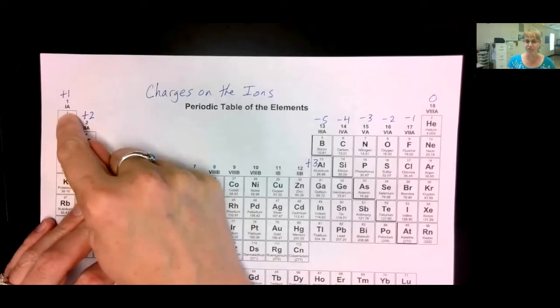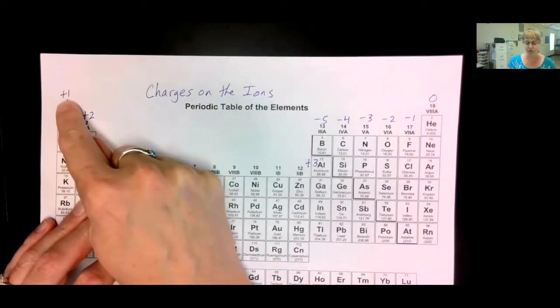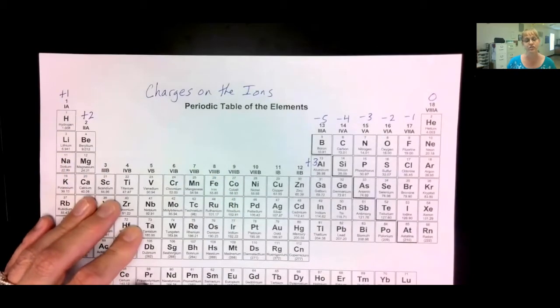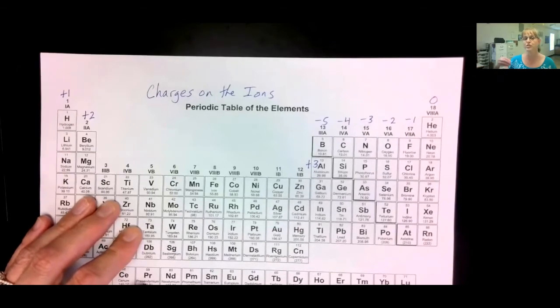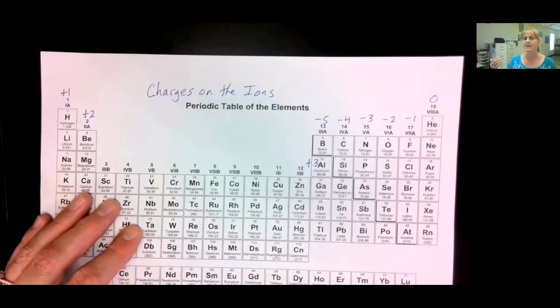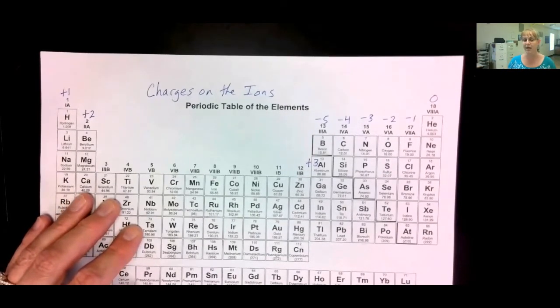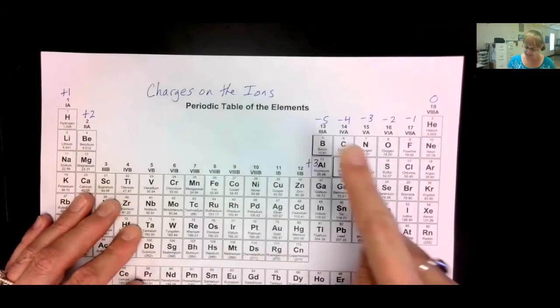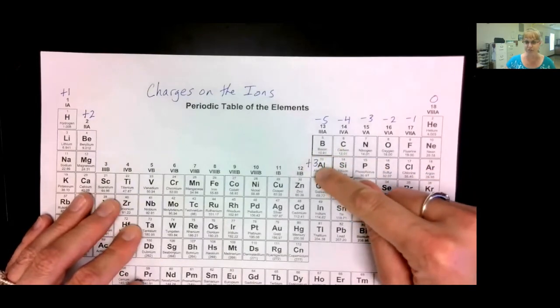If you have one outer electron, they like to lose that. Now, wait a minute. If it just lost an electron, why does it have a positive one charge? Well, electrons are negative. So, if you lose a negative, minus a negative is like plus a positive. That's why it's a positive one.